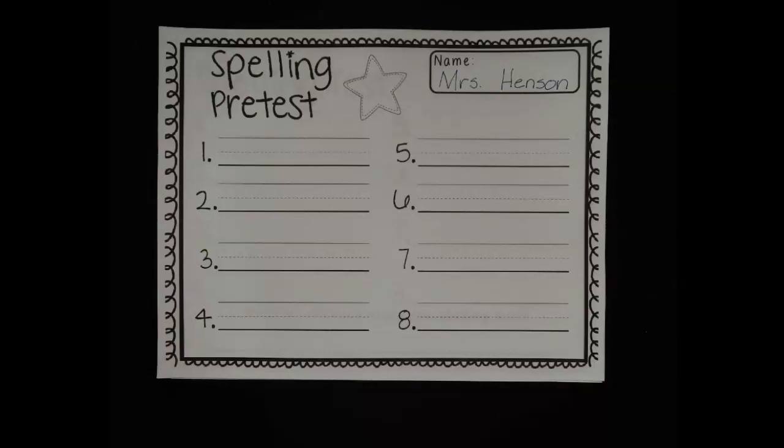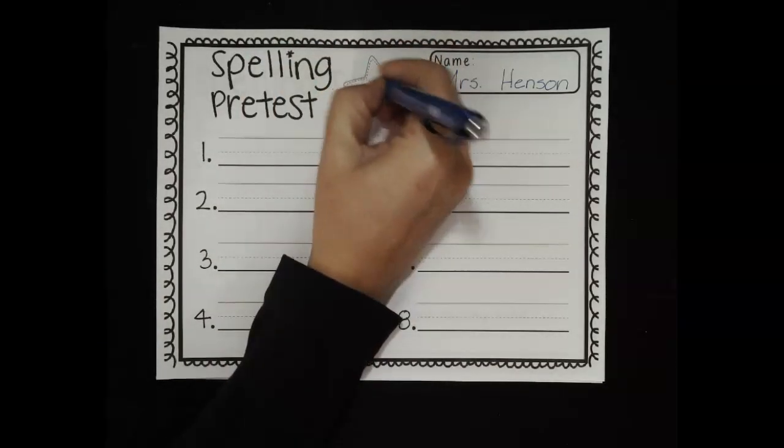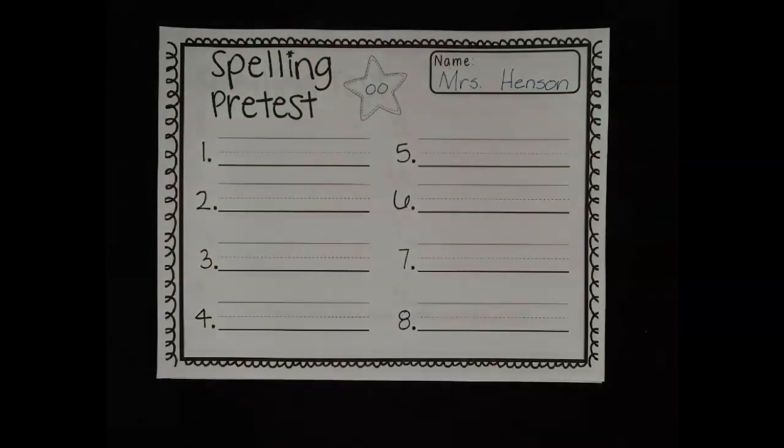For our pretest today, we have a lot of words that have an uh sound in them. Can you make that sound? Uh. Right, so that uh sound has two letters in it. It's an O and an O. When we see those two O's together, they say uh. So be listening for that sound in your words today. And remember that sound, those two letters.